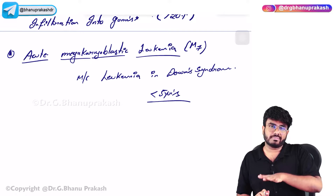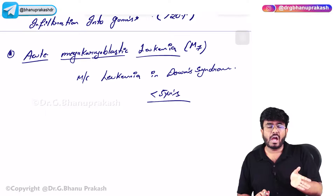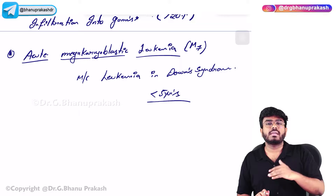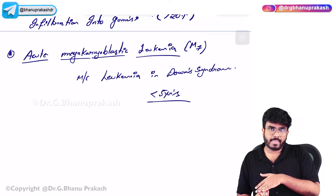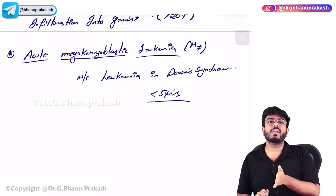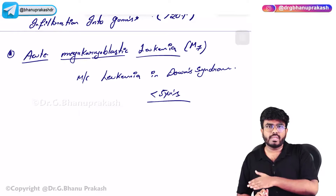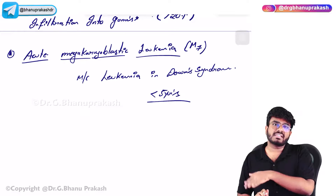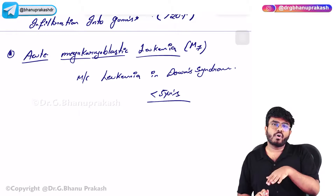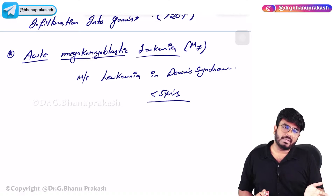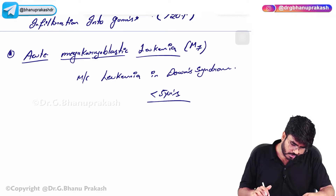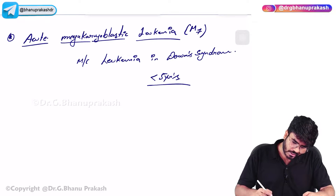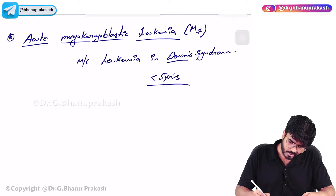After the age of 5, Down syndrome patients are at risk of getting ALL - acute lymphoblastic leukemia. After 5, it is ALL; before 5, it is AML - acute megakaryoblastic leukemia. Down syndrome association is important.